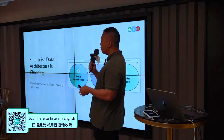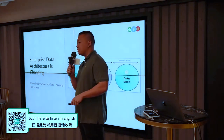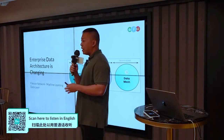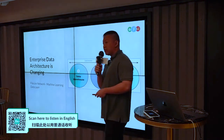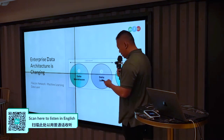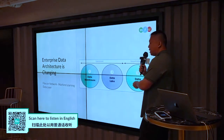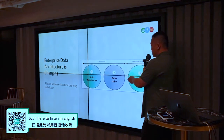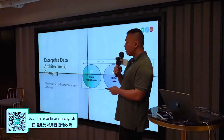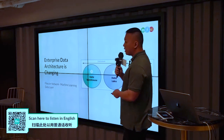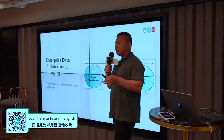I'm going to talk about how the data architecture landscape is changing. Traditionally, we have banks doing OLTP transactions. It started with the data warehouse layer, then moved to the data lake layer. Right now we're in the midst of transitioning between those stages. A lot of enterprises built data warehouses for OLTP transactions, which handled structured data.